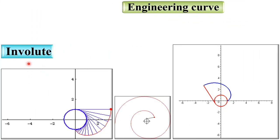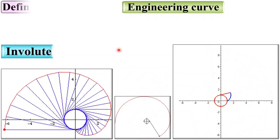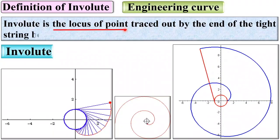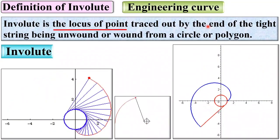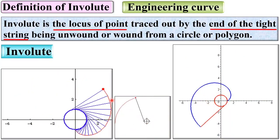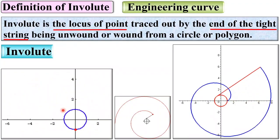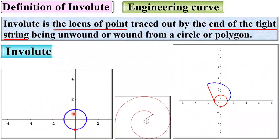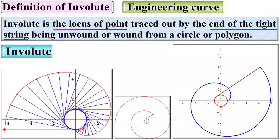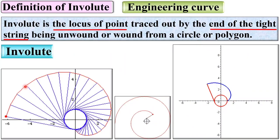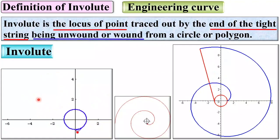First of all, let's try to understand the definition of involute with reference to three different animations. Involute is the locus of a point traced out by the end of a tight string. Here you can see this is the end of the tight string, and the path followed by this point is known as the involute of a circle. Involute is the locus of a point traced out by the end of a tight string being unwound or wound.